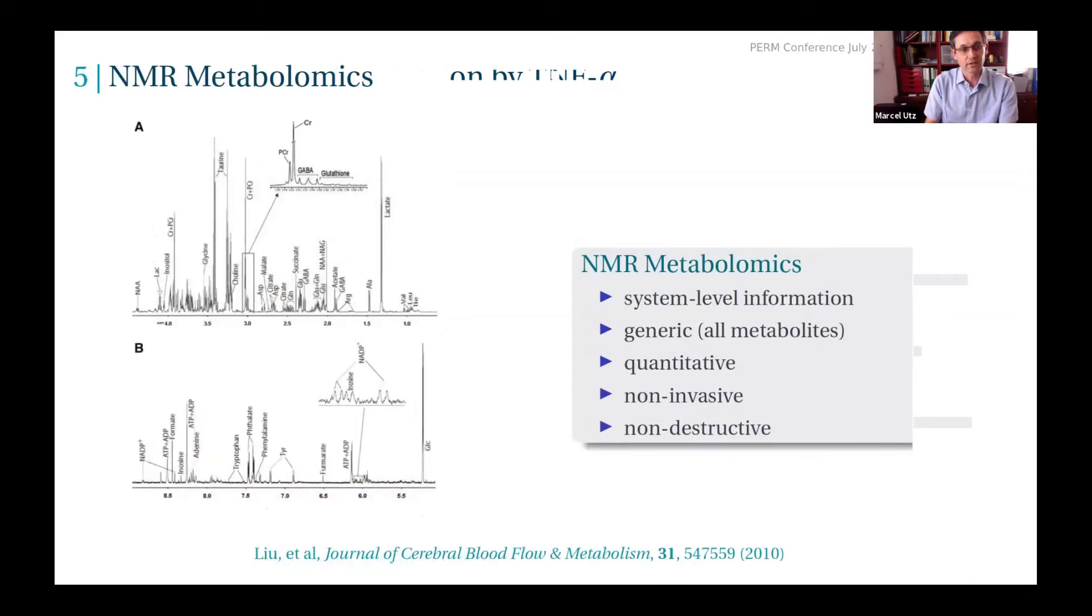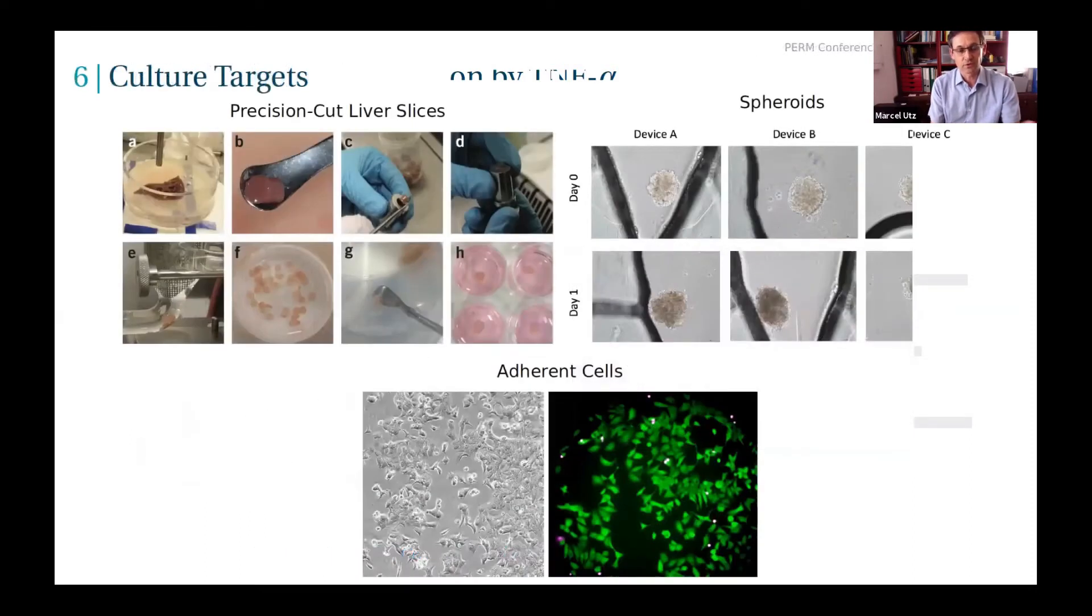Contrast that with NMR. As we all know, NMR doesn't need advertising in this crowd, but NMR gives you system-level information. If you look at the metabolites in a living system, you see essentially all of them. It gives you quantitative information if you do it right, and you can do it non-invasively, so you don't have to kill the system or poison it with some fluorescent tag in order to get information out.